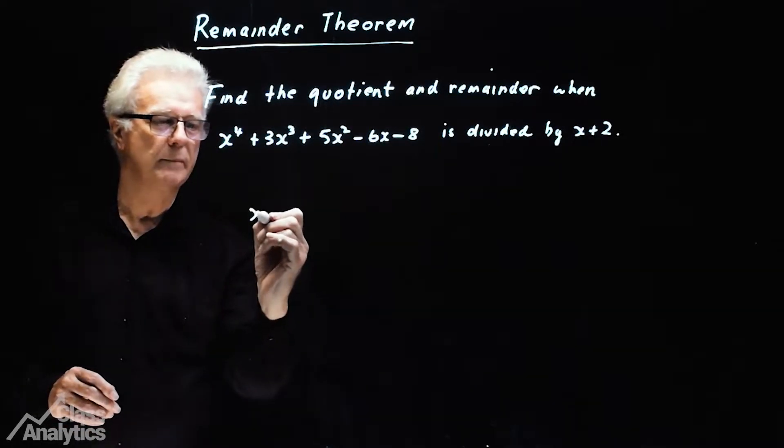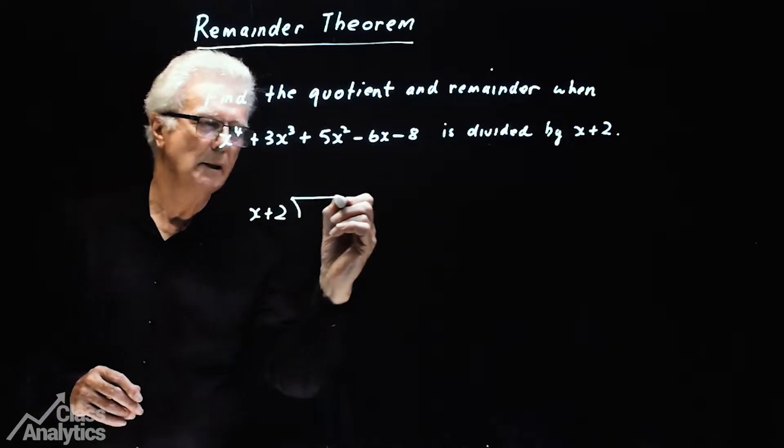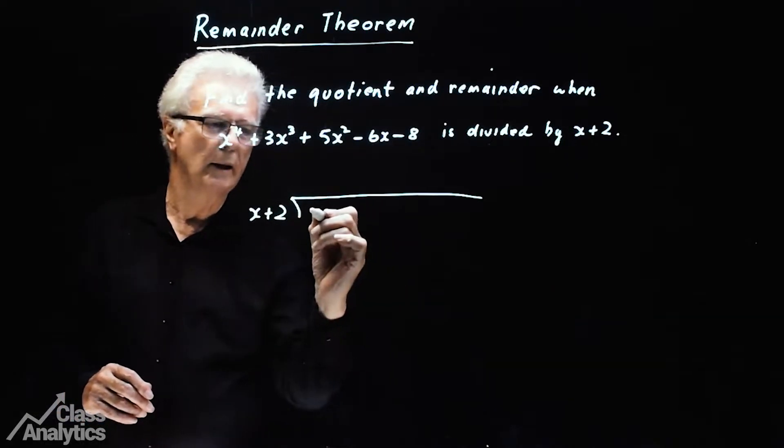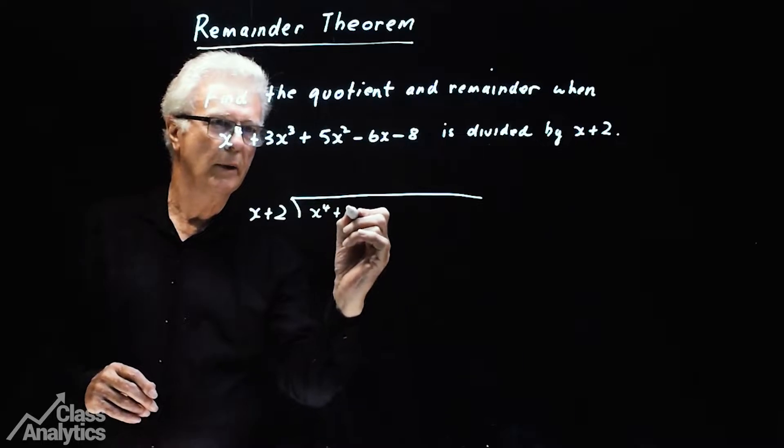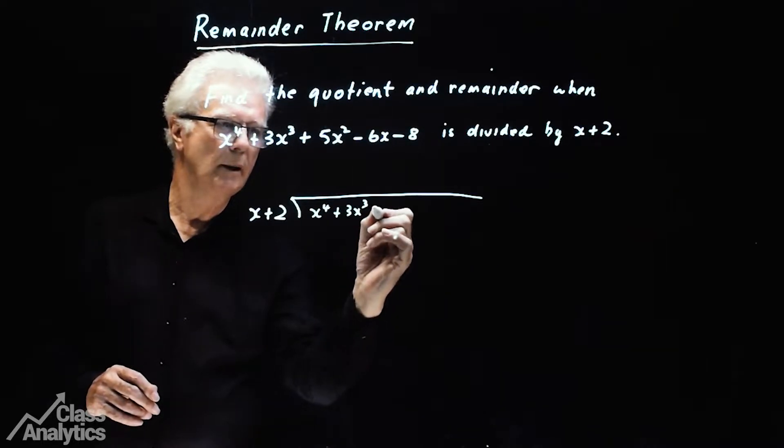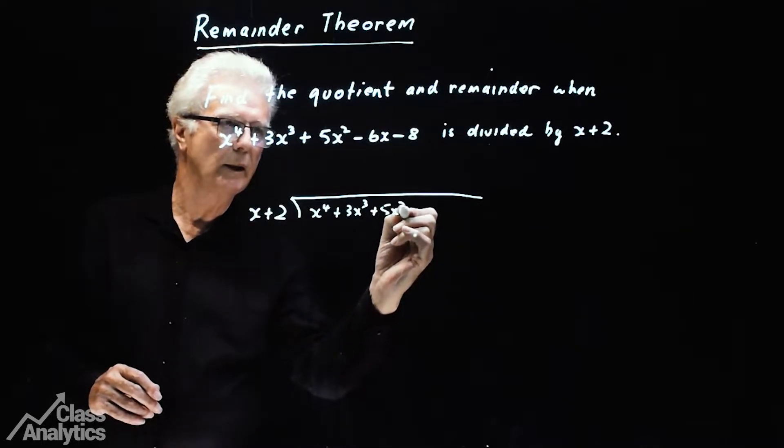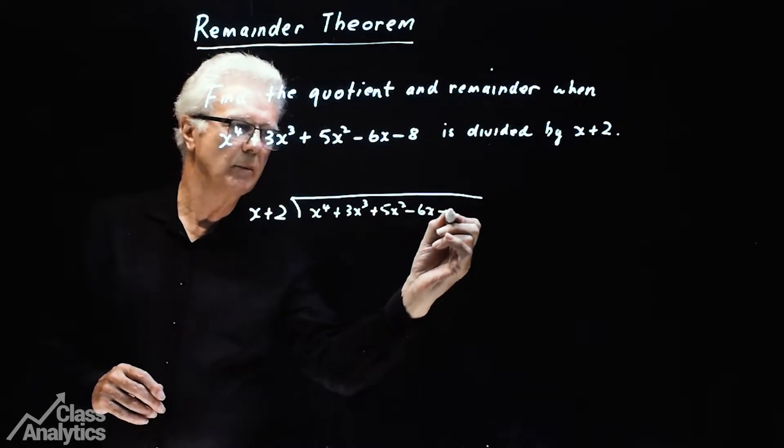We'll just set that up. So it's x plus 2 into x to the 4th plus 3x cubed plus 5x squared minus 6x minus 8.